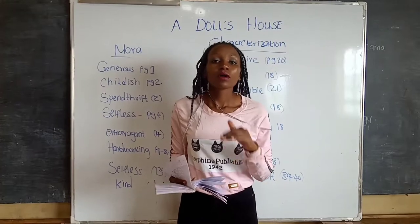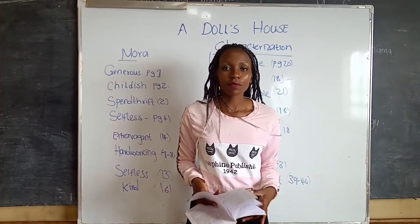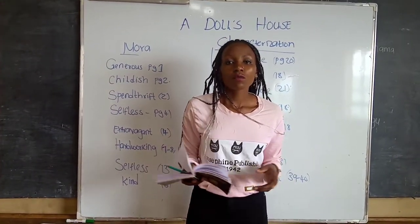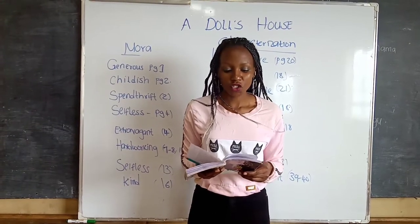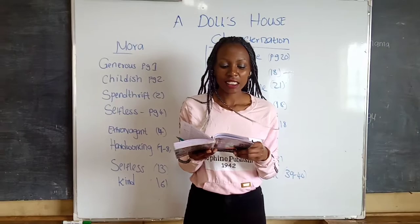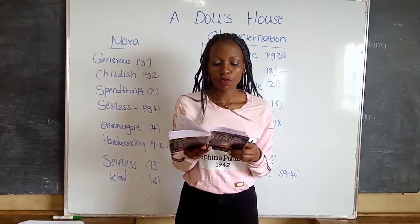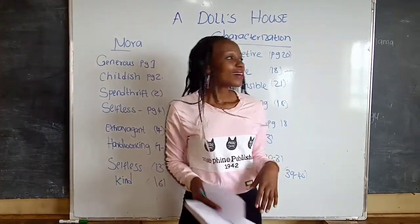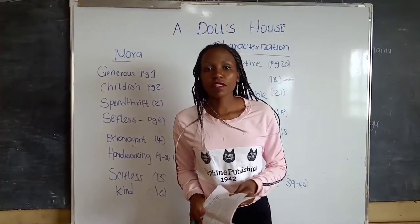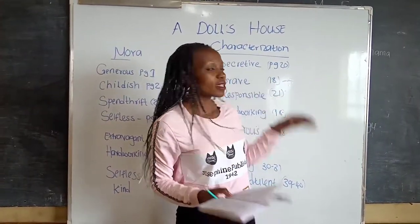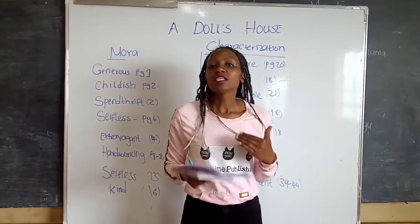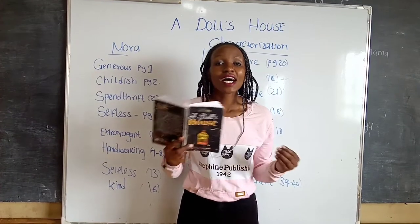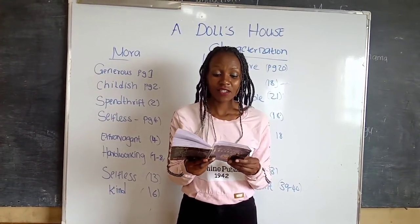On page 18, she goes against society's norm and borrows money in order to help her sick husband. From Mrs. Linde, we learn that no woman is allowed to borrow money without the husband's permission. So check page 18, in the middle, Mrs. Linde is saying: 'No, a wife cannot borrow without her husband's consent.' By doing that, Nora was brave. Next, she is secretive. That is on page 20. When you read the whole of page 20, you see that she kept the secret of borrowing the money from Krogstad. She did not tell her husband. On page 20: 'Since then, you have never told the secret to your husband.' So we can say Nora is secretive.